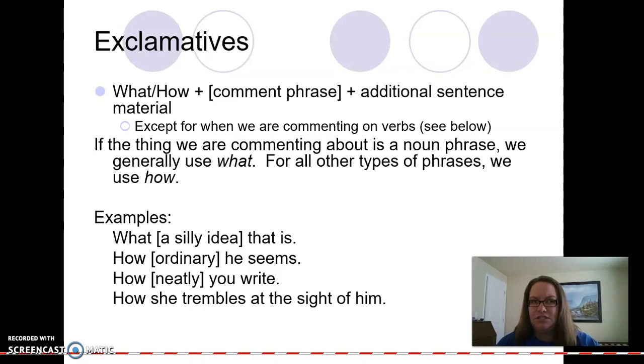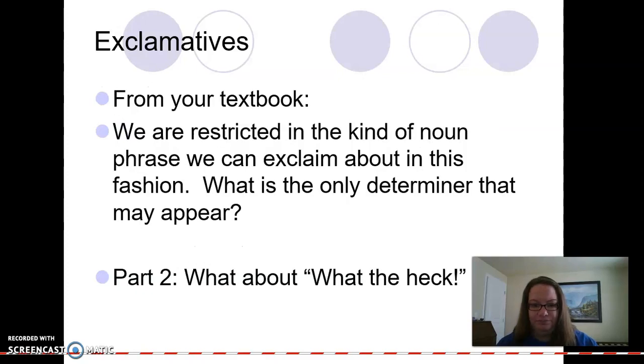So here's the structure for an exclamative. We have either what or how, some sort of comment phrase, and then additional sentence material. Except for when we're commenting on verbs. If the thing that we are commenting about is a noun phrase, we generally use what. For all other types of phrases, we use how. So what a silly idea that is. How ordinary he seems. How neatly you write. And then here we have one with a verb, how she trembles at the sight of him. Notice that we have a word order shift as we go to commenting about the verb.